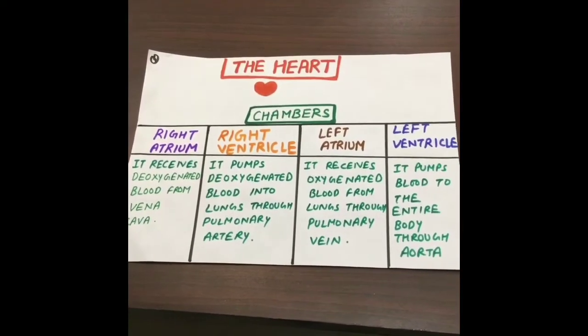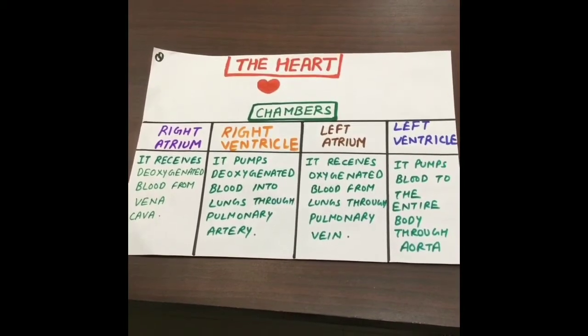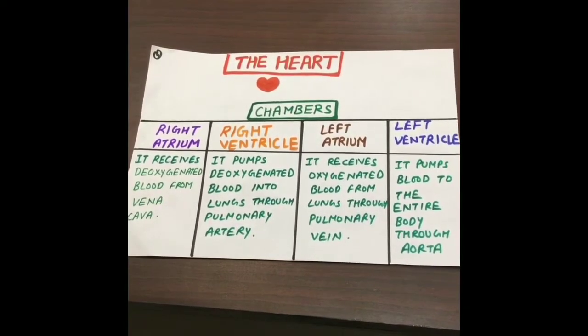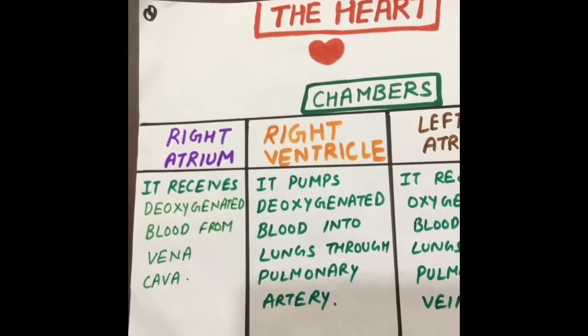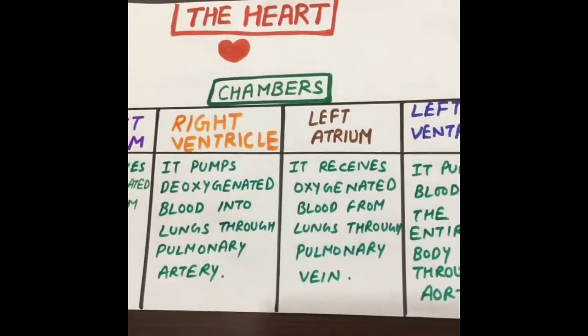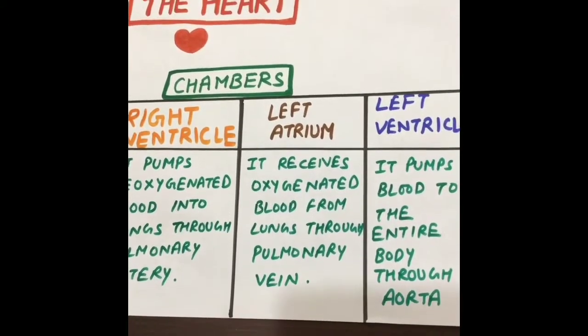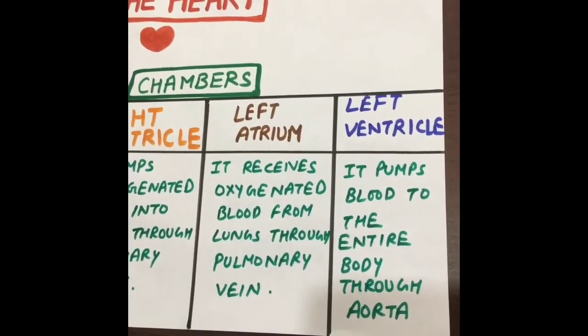We know about blood and that it flows in our blood vessels. But how is blood pumped in the blood vessels? Well, here is where the heart comes in. The heart is a muscular organ which pumps blood in our entire body. It has four chambers: the right atrium, right ventricle, left atrium, and left ventricle. The right atrium receives deoxygenated blood from the vena cava. The right ventricle pumps deoxygenated blood into the lungs through the pulmonary artery. The left ventricle pumps blood into the entire body through the aorta.